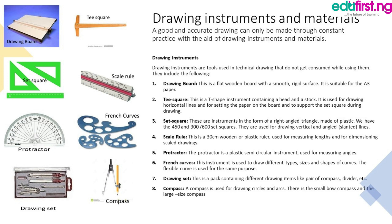They include the following. Number one: drawing board. This is a flat wooden board with a smooth rigid surface, suitable for A4 paper — you can see it on the top left corner as an example of a drawing board. Number two: T-square. This is a T-shaped instrument containing a head and a stock. It is used for drawing horizontal lines and for setting the paper on the board to support the set-square during drawing. Beside the drawing board you can see the T-square.